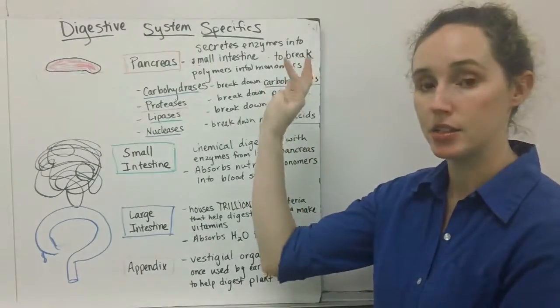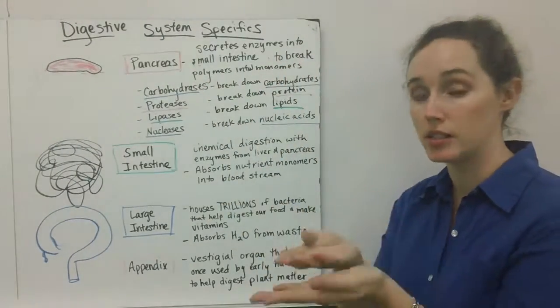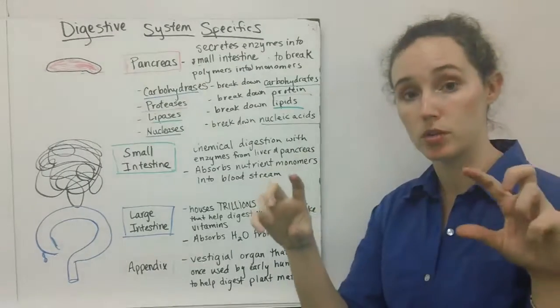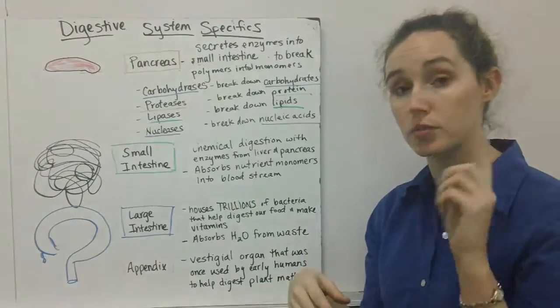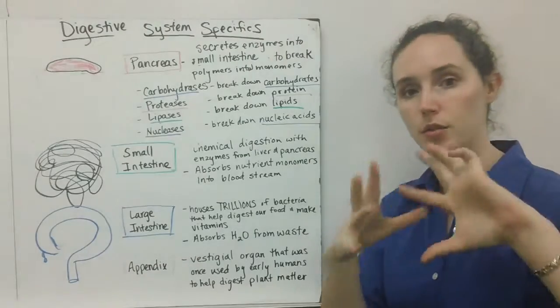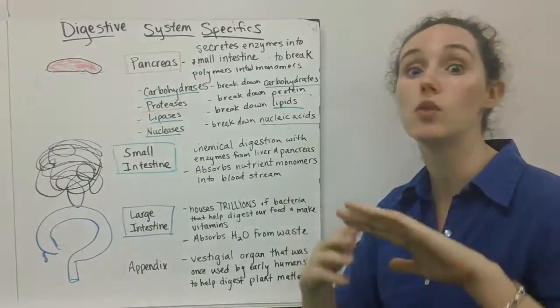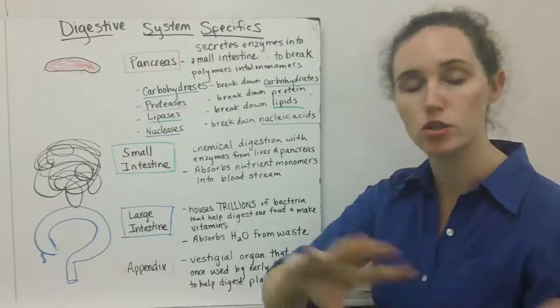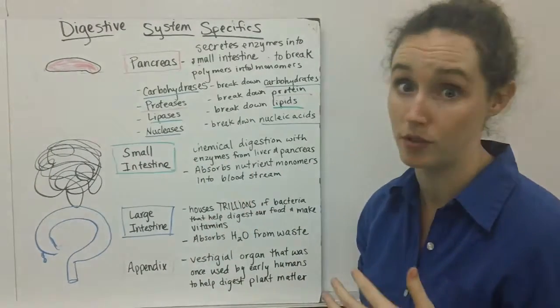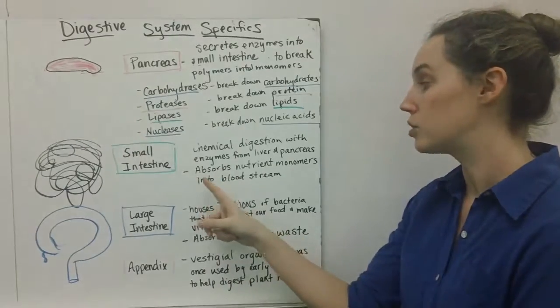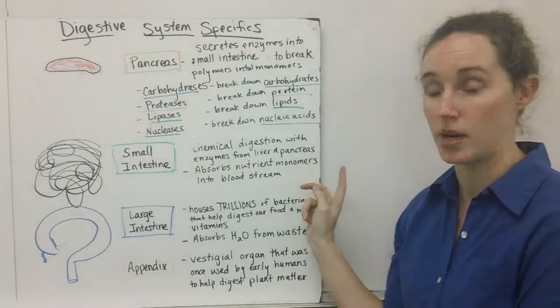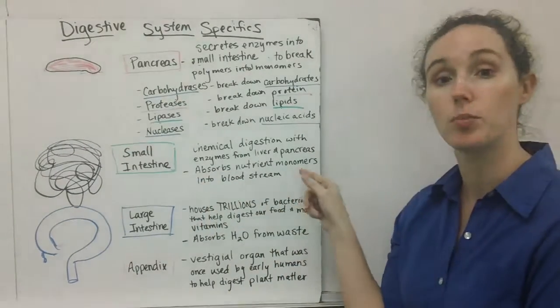The liver and gallbladder are releasing their enzymes into the first part of the small intestine, so the first role of the small intestine is it's a site for further chemical digestion. But that's just like a small part of it. Then the rest of the long tube that is your small intestine—it's about 22 feet long—its job is to absorb all those nutrient monomers and send them to the bloodstream.